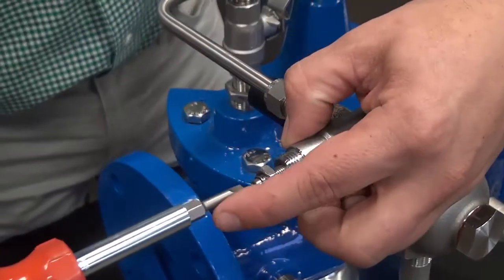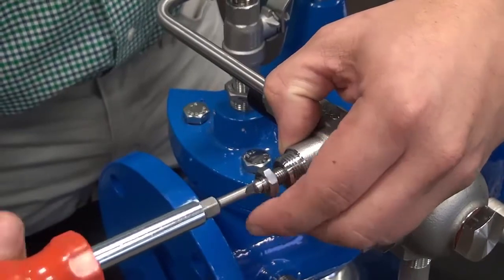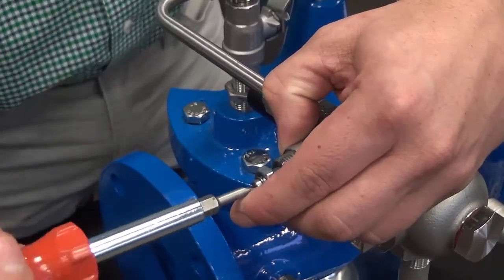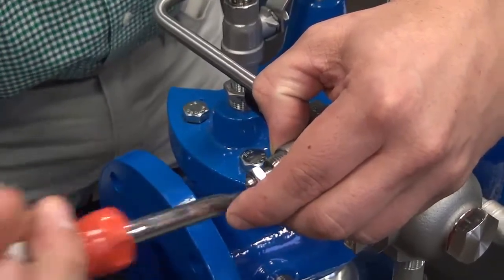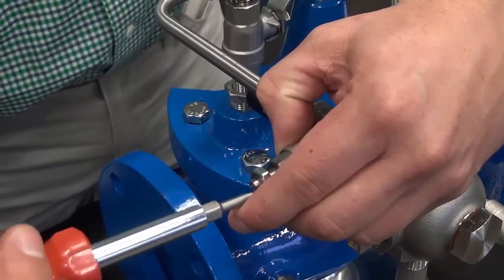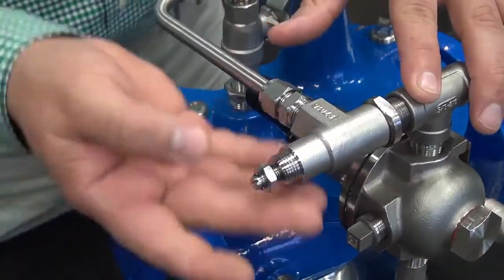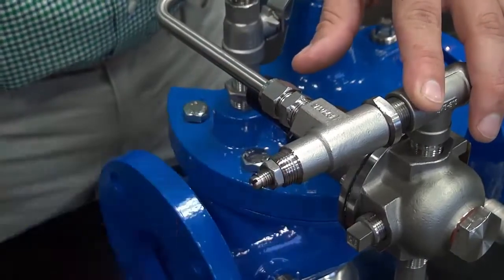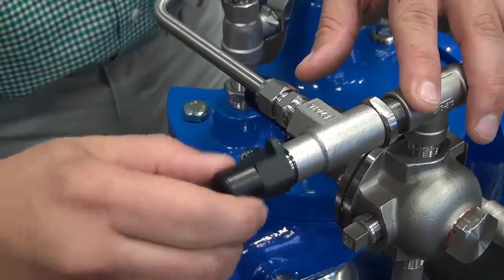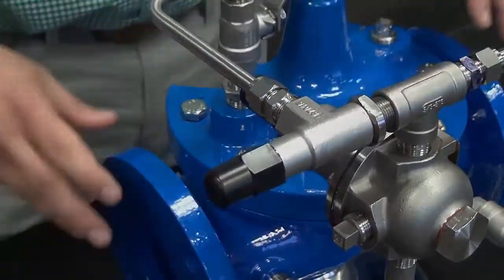But you can give it a couple of turns to start, maybe one, two turns to start. Lock the jam nut, replace your cover and that's the setting of the CV.